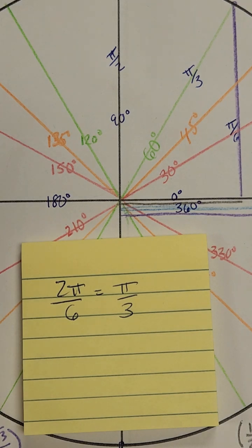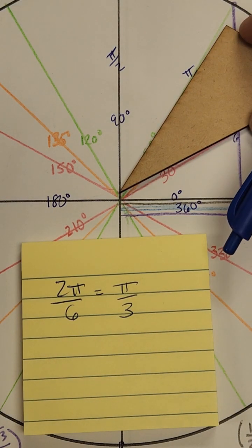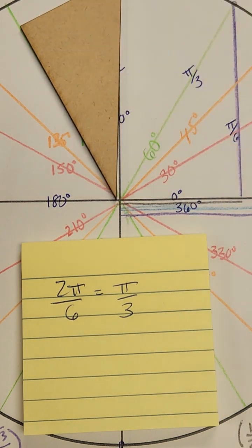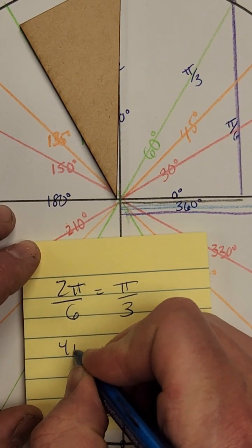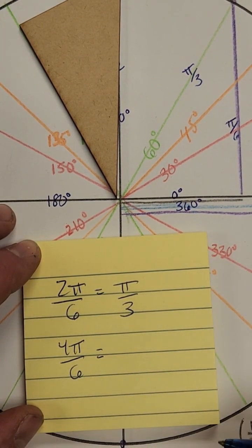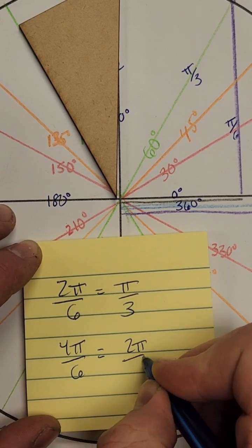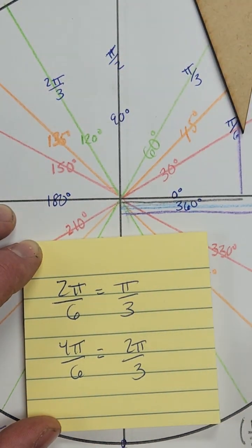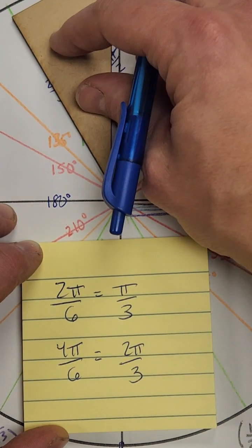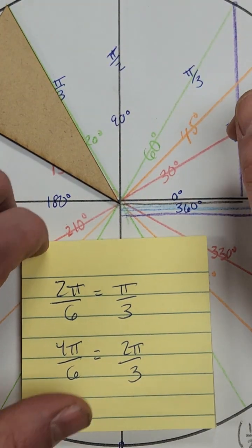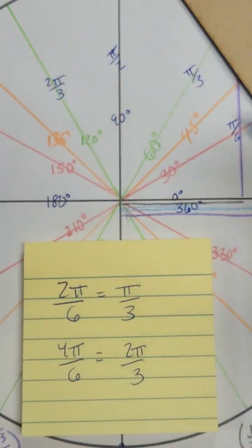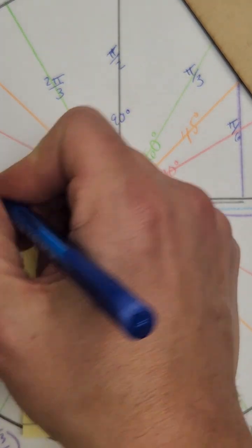This would be our fourth sixth — four π over six. Two goes into both of those, so that reduces to 2π/3. So this would be 2π/3 radians. Continuing on, this is our fifth one — five π over six. That doesn't reduce, so that's just 5π/6 radians. And then six π over six would just be π.